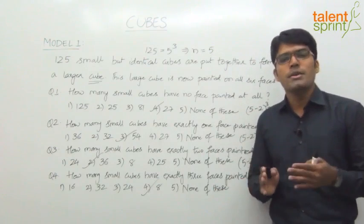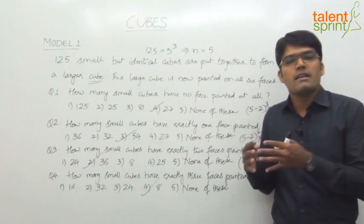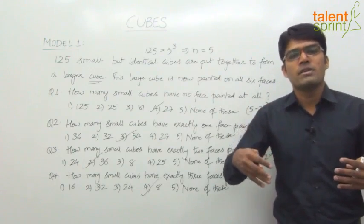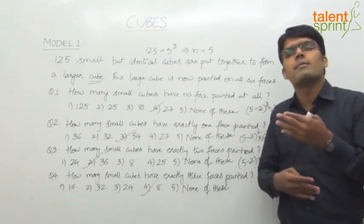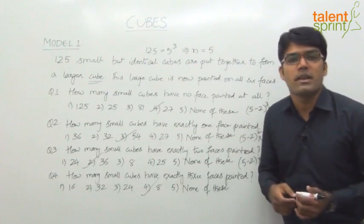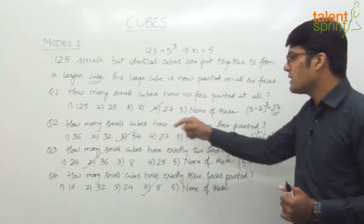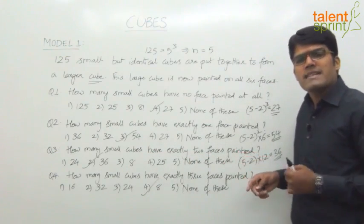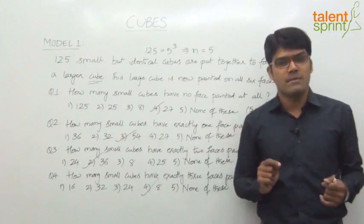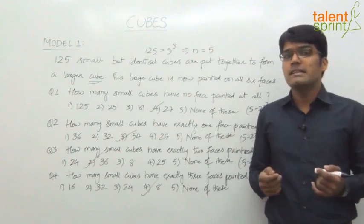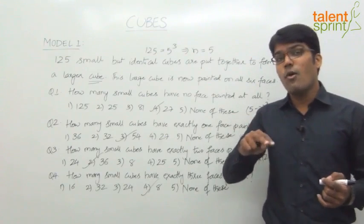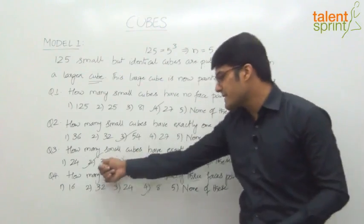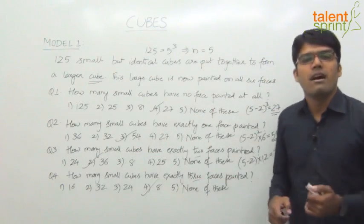This is a very simple topic. You need to understand how a larger cube is cut into smaller cubes — how many cubes are on edges, corners, and faces. Also, read the question carefully. For example, instead of 'exactly 2 faces painted,' the question may ask 'at least 2 faces painted,' meaning minimum 2, so it could be 2 or 3 faces. In that case, add the two answers: 36 plus 8 equals 44.